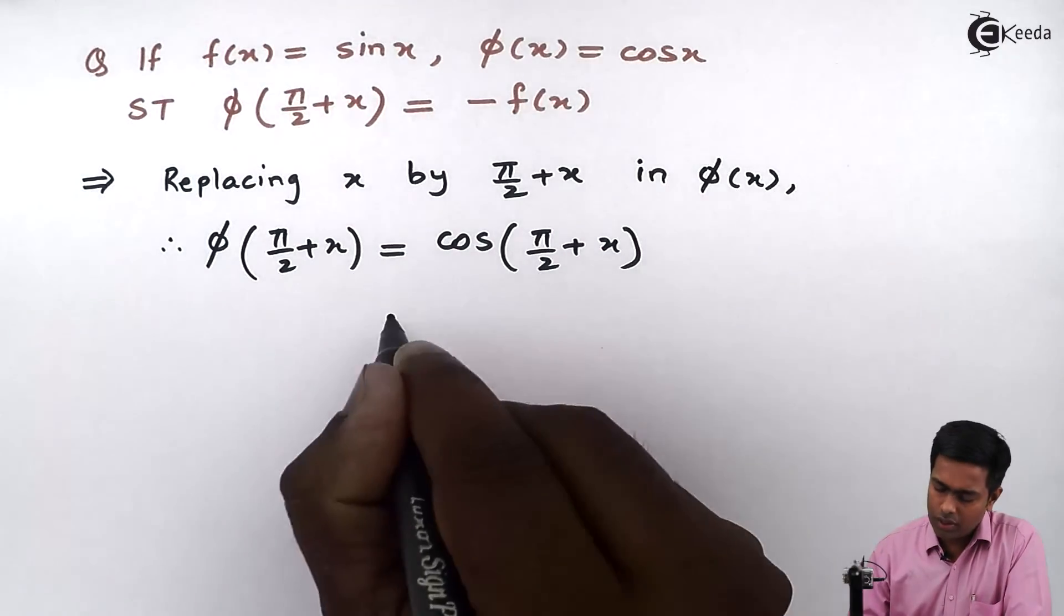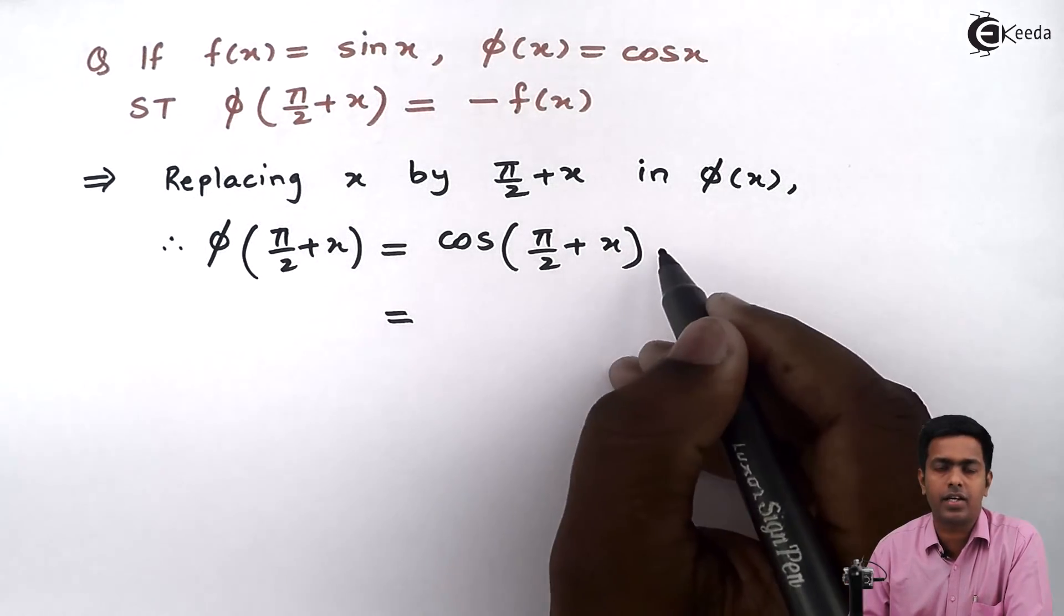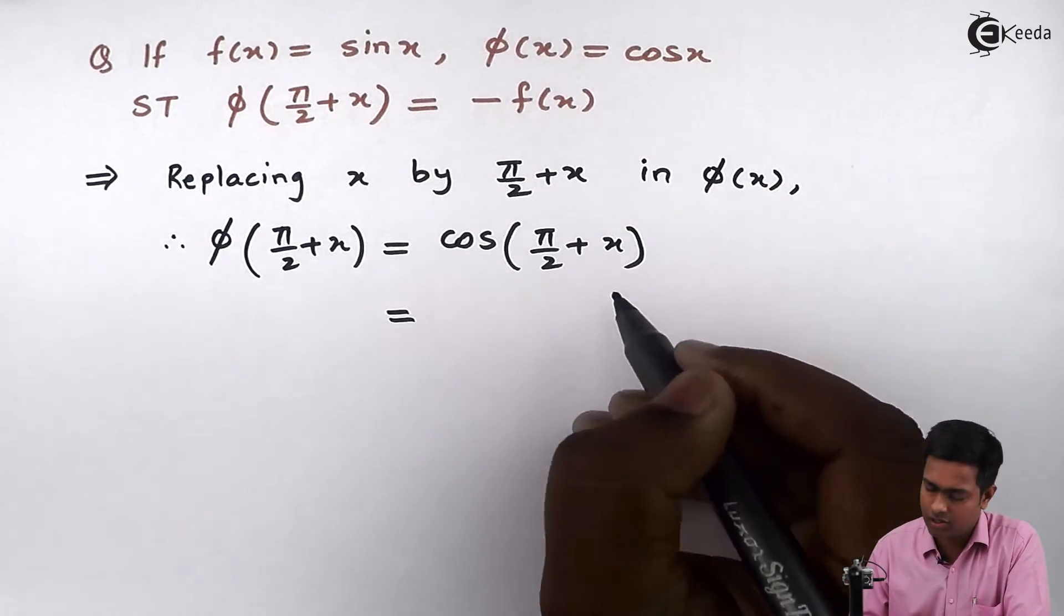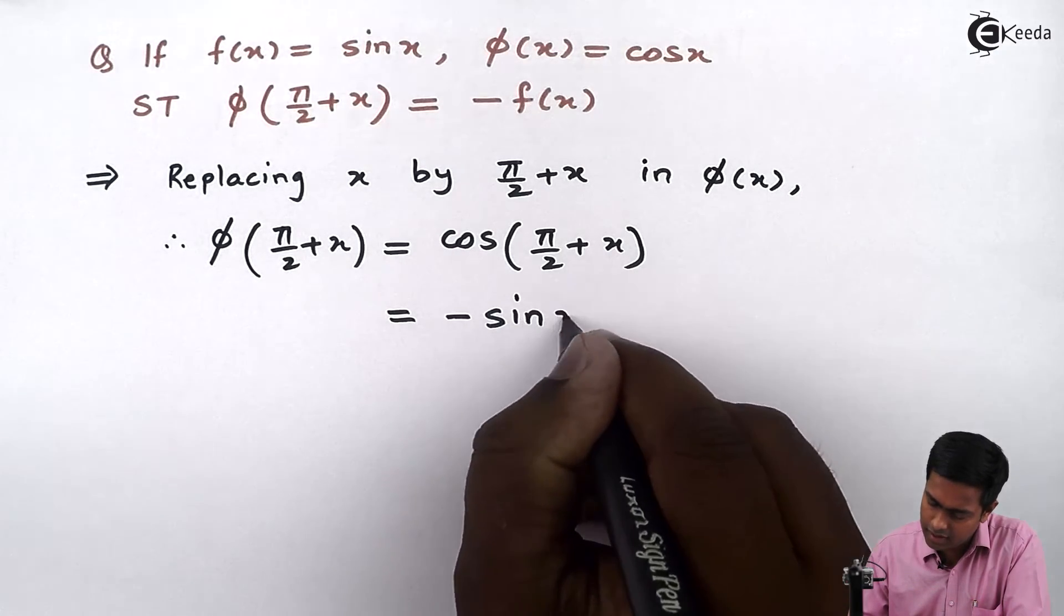Now we all know that cos(π/2 + θ) is -sin θ. So here it will become -sin x.